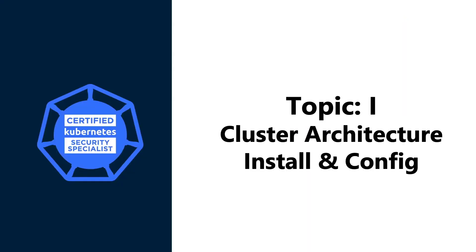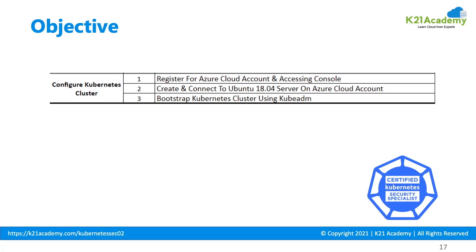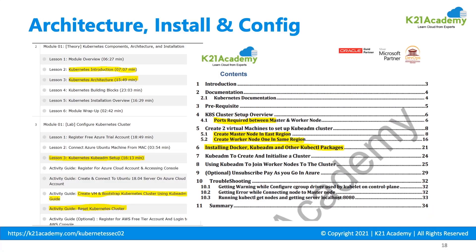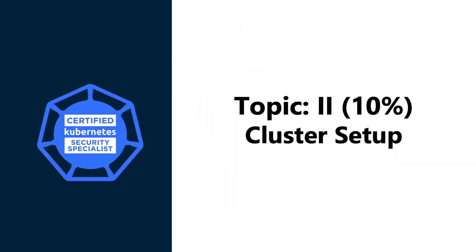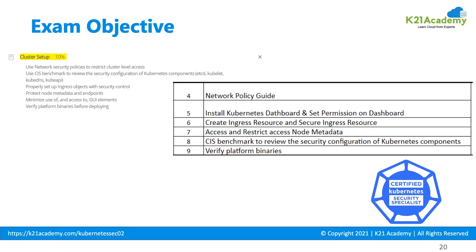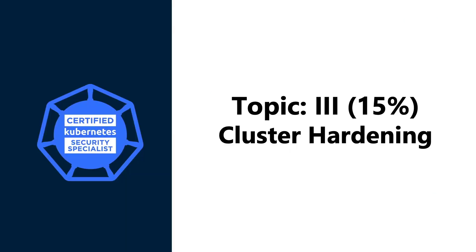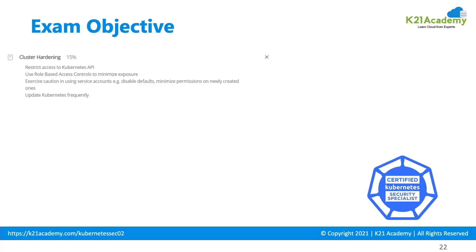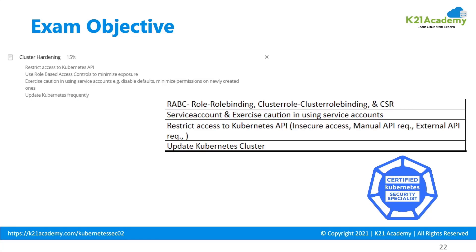Now let's see the curriculum topic-wise. Topic 1: Cluster Architecture, Installation and Configuration — configuring a Kubernetes cluster involves the basics to get started with the Kubernetes setup. Topic 2: Cluster Setup, weighed at 10%, includes network security policies, reviewing security of components like kubelet, kubedns, and kubepi, and verifying platform binaries. Topic 3: Cluster Hardening, weighed at 15%, includes role-based access control, restricting access to the Kubernetes API, and updating Kubernetes. Topic 4: System Hardening, weighed at 15%, covers use of kernel hardening tools and reducing attack surfaces.